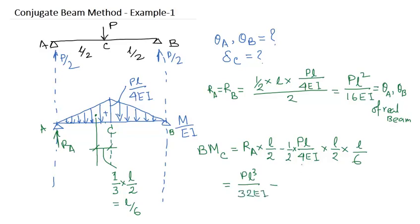Minus it becomes PL cubed by 96EI. So simplify it, it will be PL cubed by 48EI.